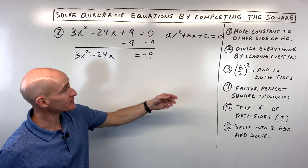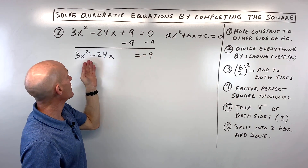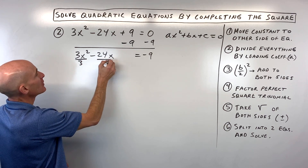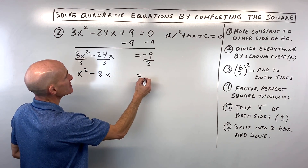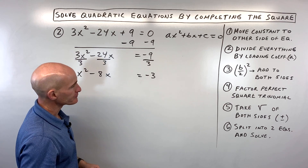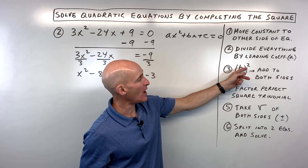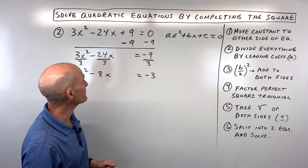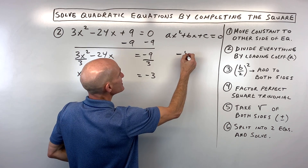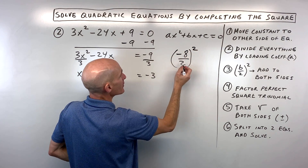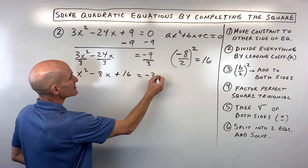Step number 2: divide everything by the leading coefficient, the a value — the number in front of the x squared term. Dividing everything by 3 gives us x squared minus 8x equals negative 3. Step 3: take half of the b value squared and add it to both sides. The b value is negative 8, so negative 8 divided by 2 is negative 4, and negative 4 squared is positive 16. We add 16 to both sides.